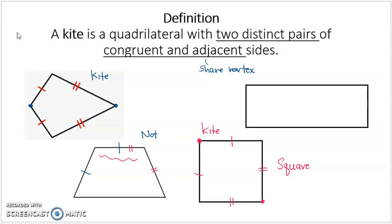Lastly, a non-square rectangle is not a kite at all. This side has no adjacent sides that are congruent if the rectangle is non-square.